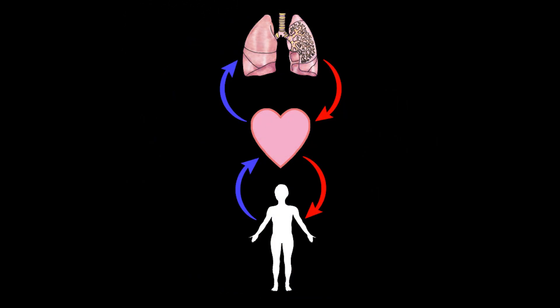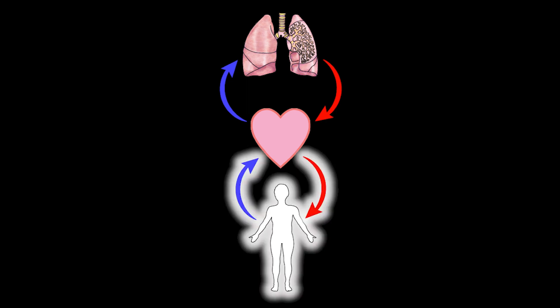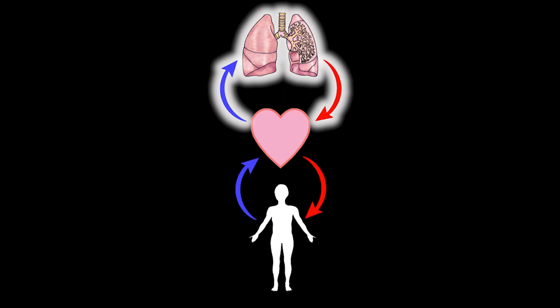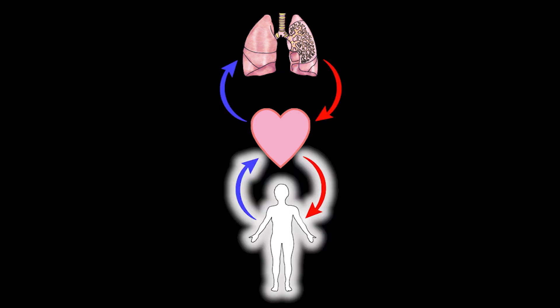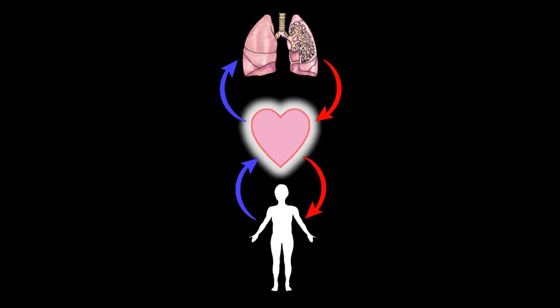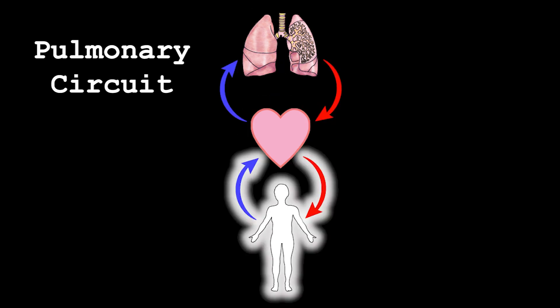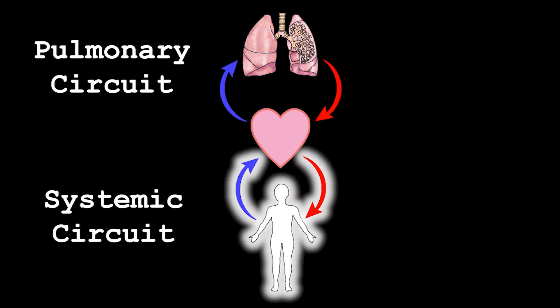If we were to draw a map of blood flow, it might look something like this. Notice that we have two loops or circuits — one that goes to the lungs, and one that goes to the body. The loop that goes from the heart to the lungs is called the pulmonary circuit, and the loop that goes from the heart to the body is called the systemic circuit.